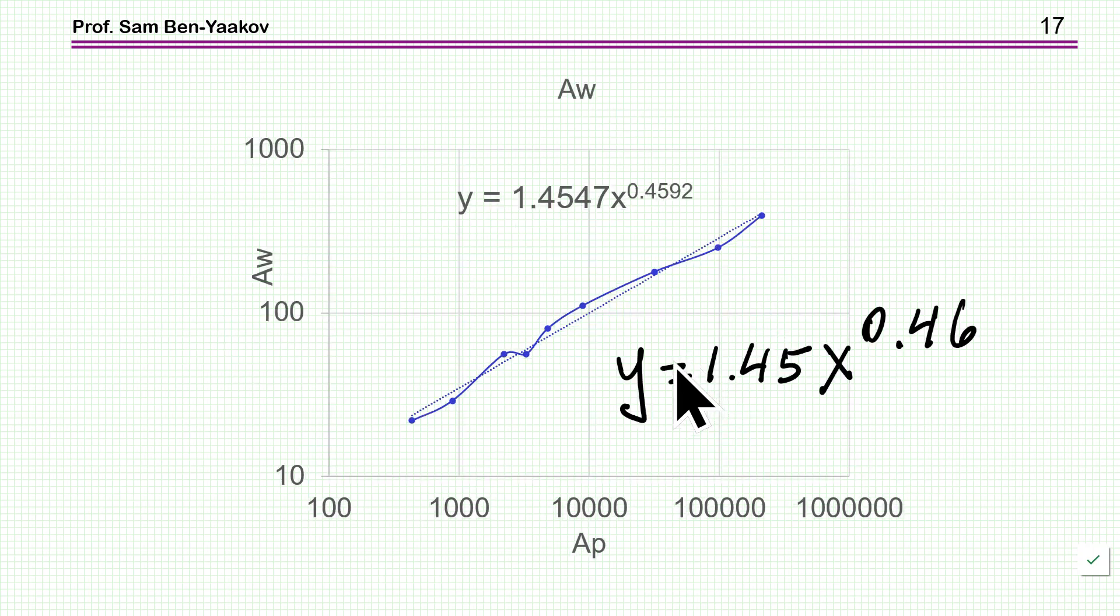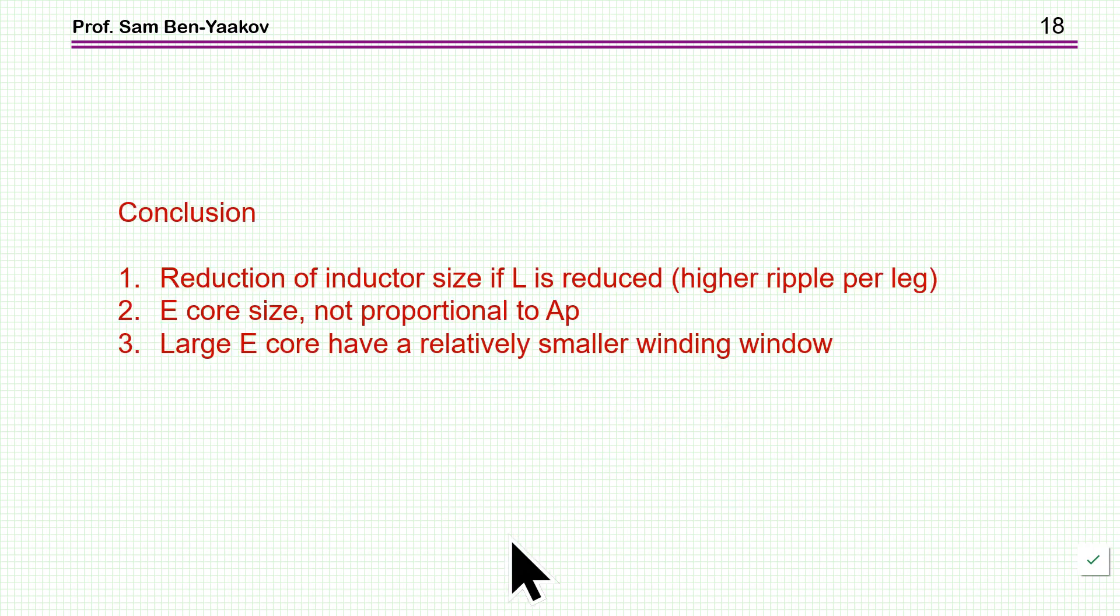Now what about the window area, that is the number of turns I can put in? Again, we have a very nice trend, but in this case notice that this exponential is 0.4, which means that the larger the core, the smaller winding area we have. So we have lower number of turns proportionally, and therefore the conduction loss will be lower while the core losses will be higher. So this is again a very interesting trend that the larger the core, the smaller the winding area, and of course proportionally the core cross-section area is larger.